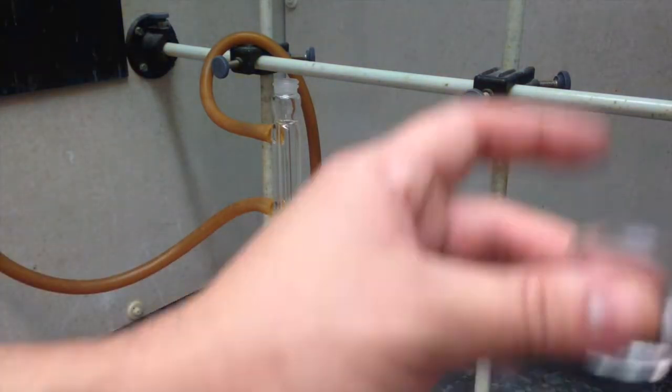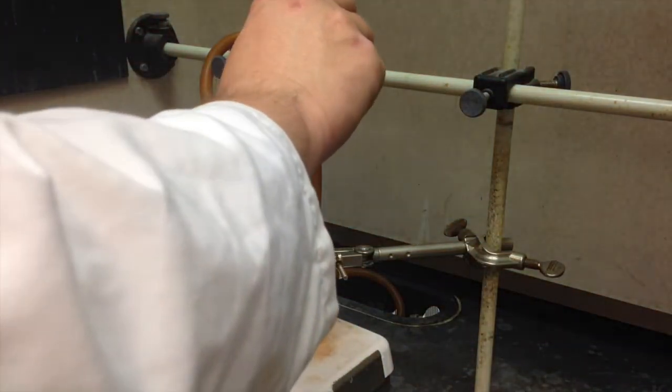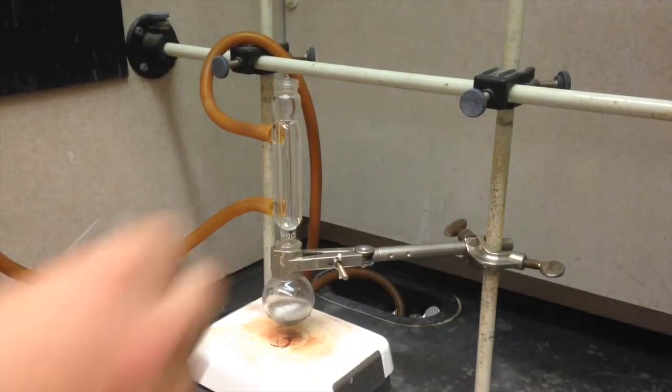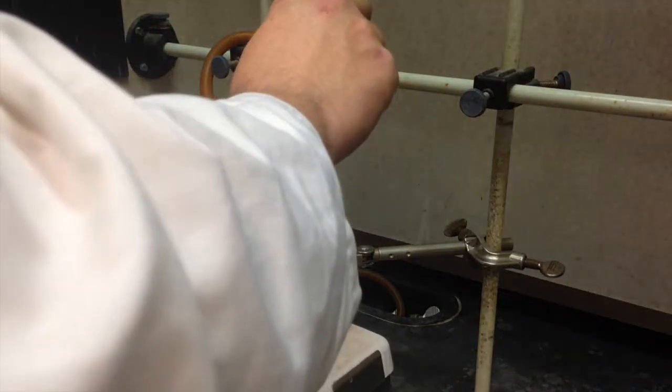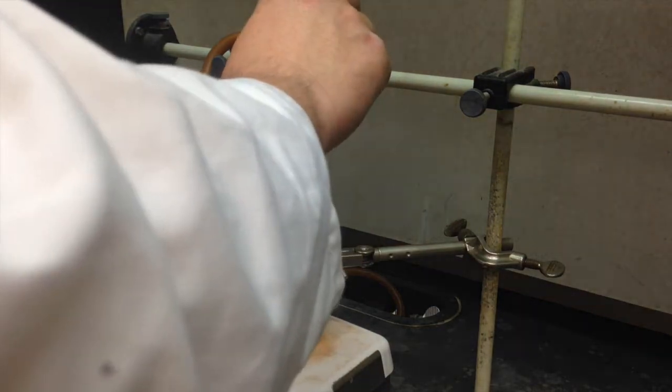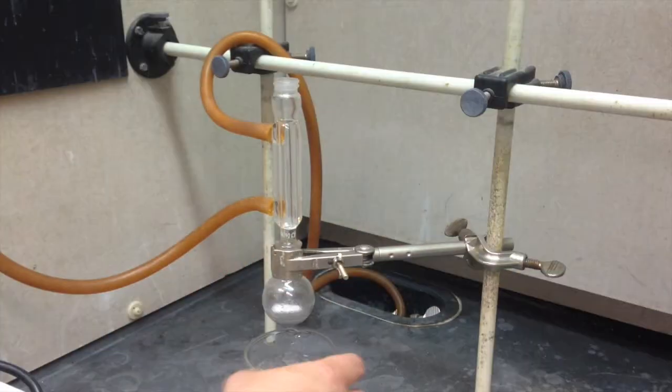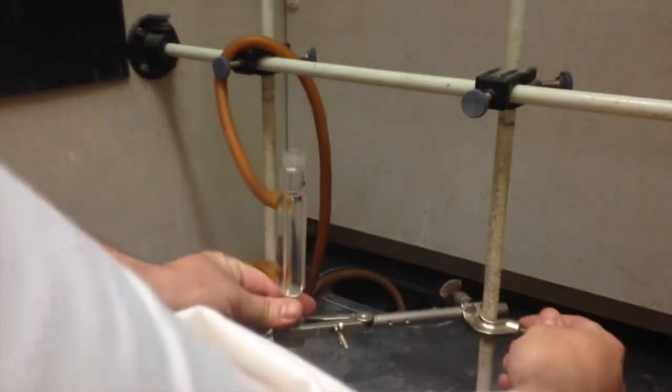When we're adding the acetone solution, we want to do this slowly. Either tip it over really, really slowly in really small increments, or use a pipette. Either way, it might spray out, so keep checking the temperature of your round bottom. Now with the second part of the reaction done, we'll move on to the third, the acidification.